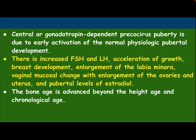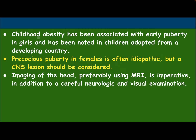Central or gonadotropin-dependent precocious puberty is due to early activation of the normal physiological pubertal development. There is increased FSH and LH, acceleration of growth, breast development, enlargement of the labia minora, vaginal mucosal changes with enlargement of the ovaries and uterus, and pubertal levels of estrogen. Bone age is advanced beyond the height age and chronological age. Childhood obesity has been associated with early puberty in girls and has been noted in children adopted from developing countries. Precocious puberty in females is often idiopathic, but CNS disease should be considered.